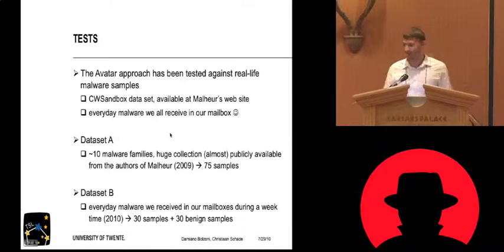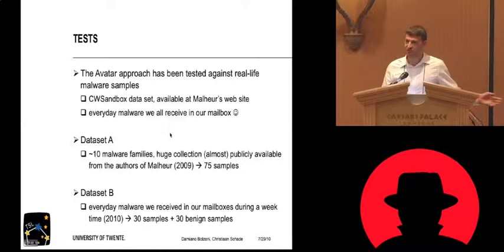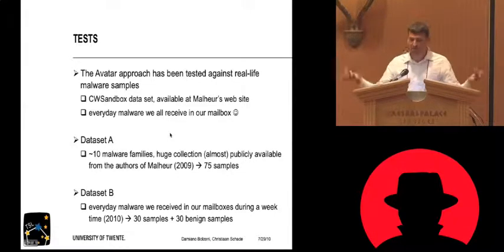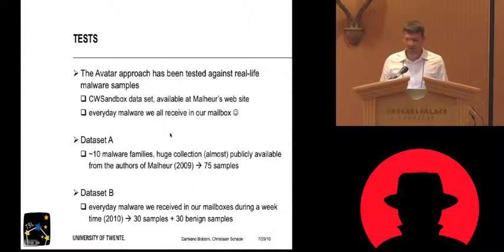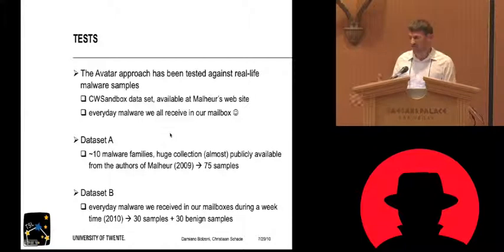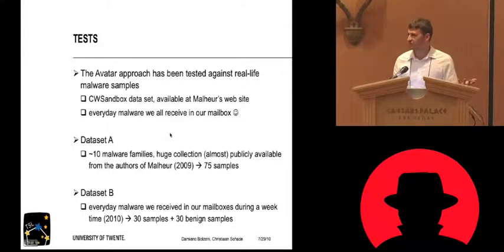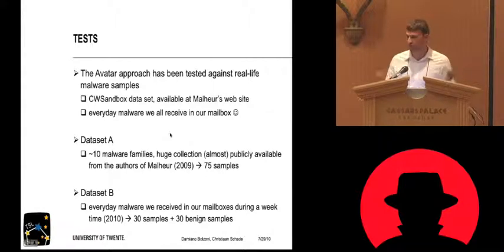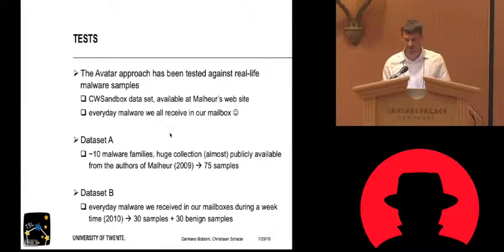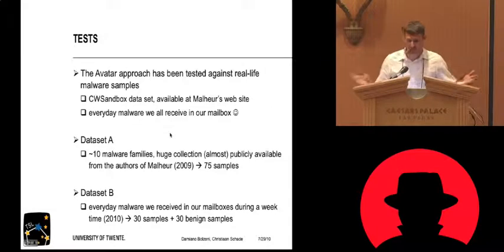Dataset B is malware that we received in a week, a couple of months ago — it came through our regular mailbox. Most antivirus was not detecting it. We collected 30 samples and then added 13 good samples to test how the heuristics are performing — are we having false positives, where we flag as malware something that is actually not malware? And how that would affect the whole process and analysis.